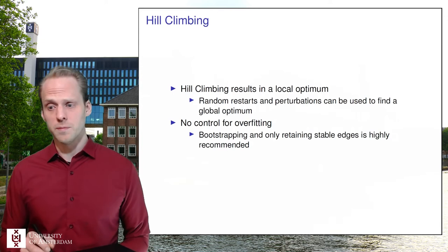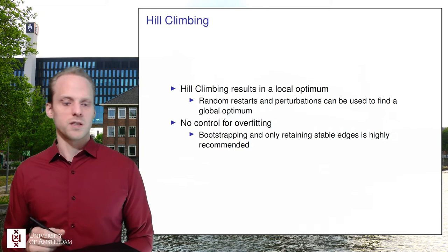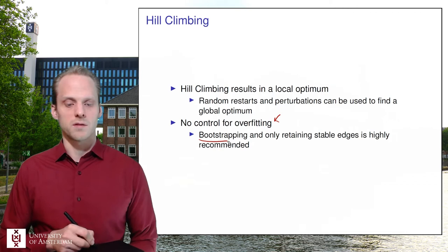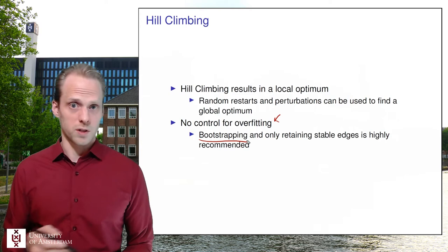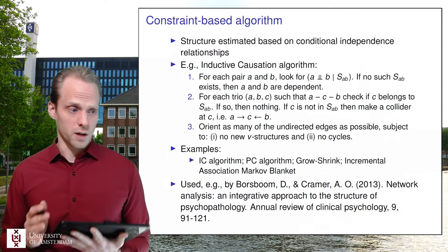The hill climbing algorithm results in a local optimum, meaning the network you get depends on where you start. There's not much control for overfitting, so bootstrapping is very important — you don't want to present only one network; you want to present a range of possible networks. This applies especially to score-based algorithms.